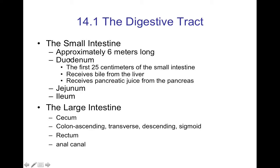In the small intestine, the order of structures is duodenum, jejunum, and ileum — order matters. The large intestine proceeds in this order: cecum, colon, rectum, and anus with the anal canal. The colon involves the ascending, transverse, descending, and sigmoid colon. You'll want to be familiar with the order of these parts of the colon.